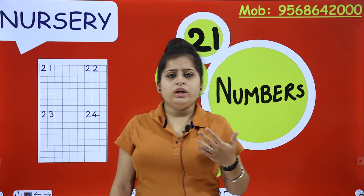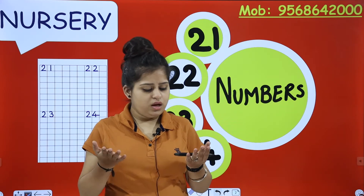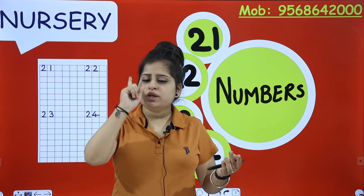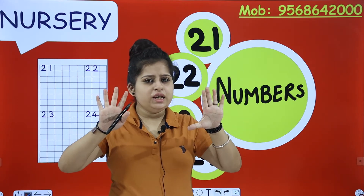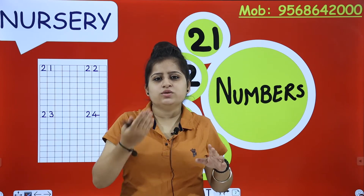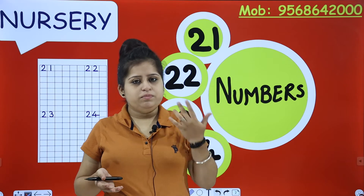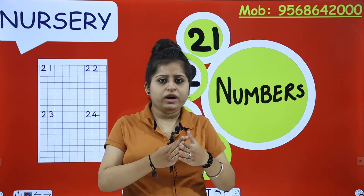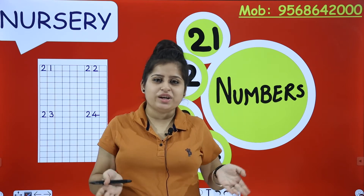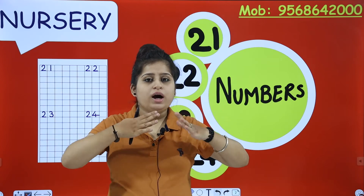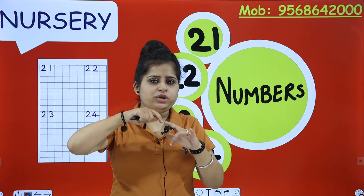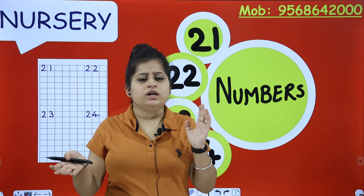So how do we count 21? Two hands of yours, two hands of mama's, and one hand of papa's — but from papa's hand, you take only one finger. So how many total? Your 10 fingers plus mama's 10 fingers — that means 20. And if we add papa's one finger to 20, that is 21. So 10 plus 10 plus 1 is also 21.